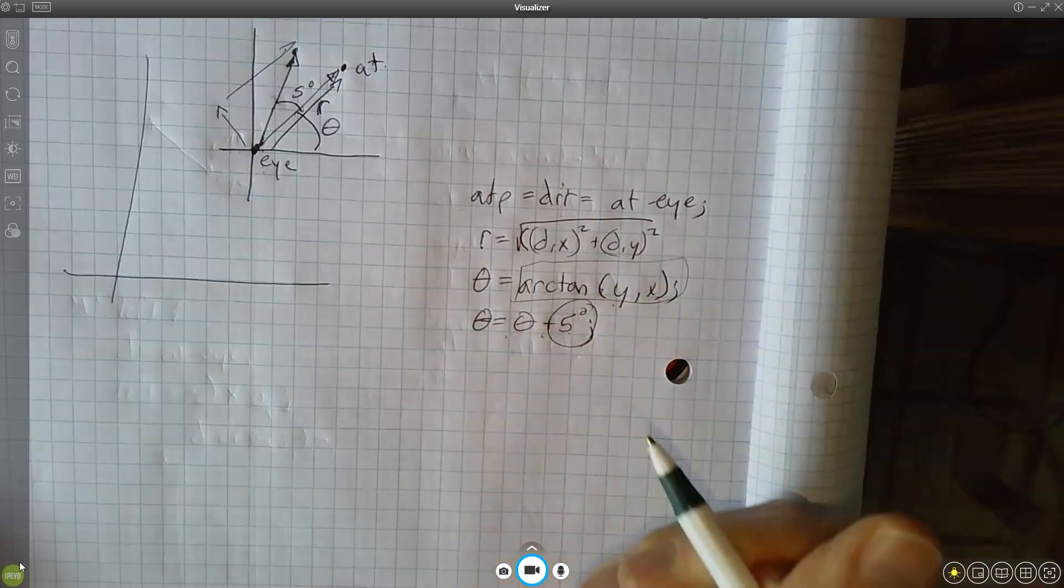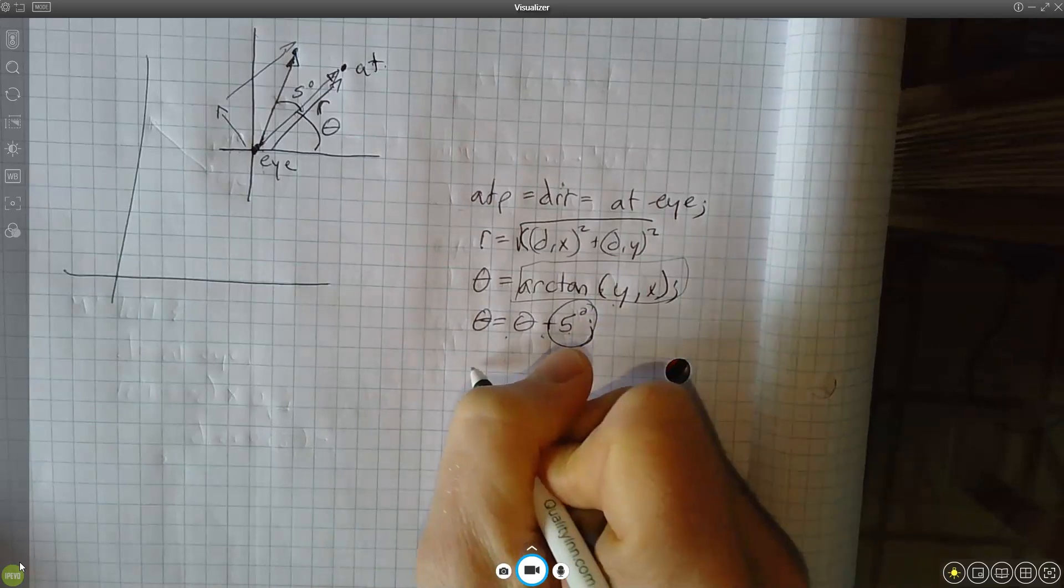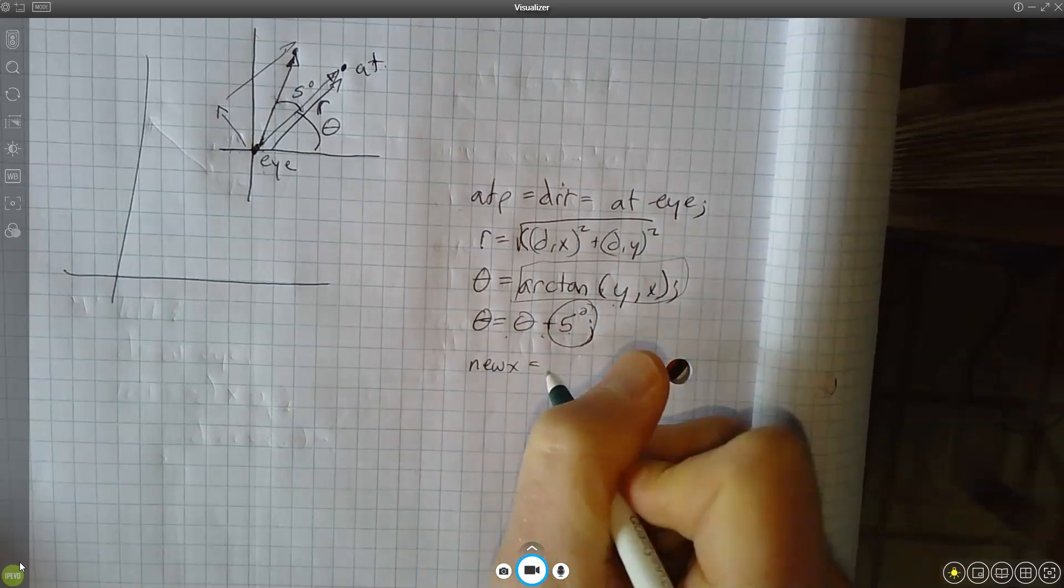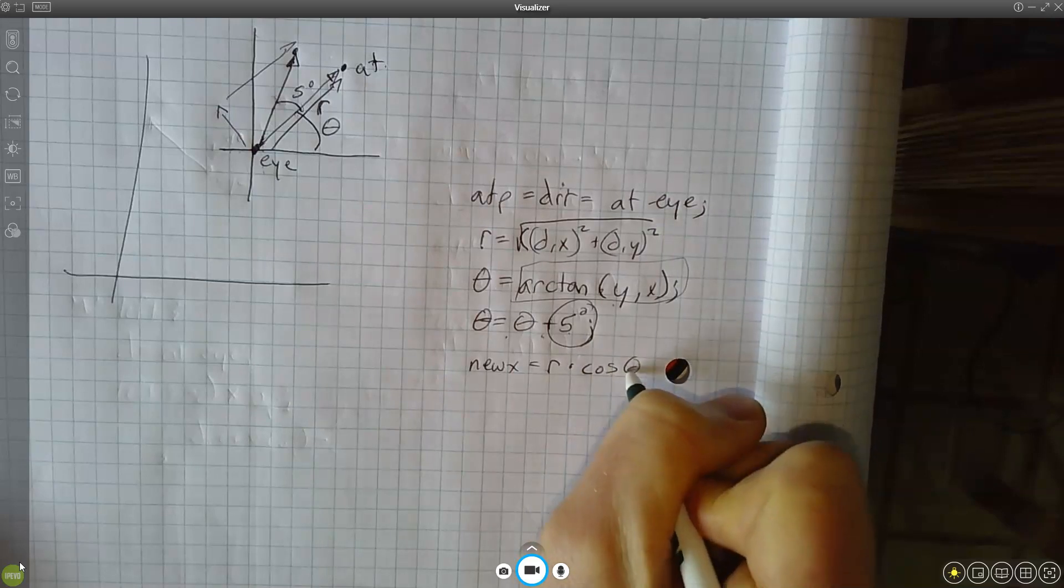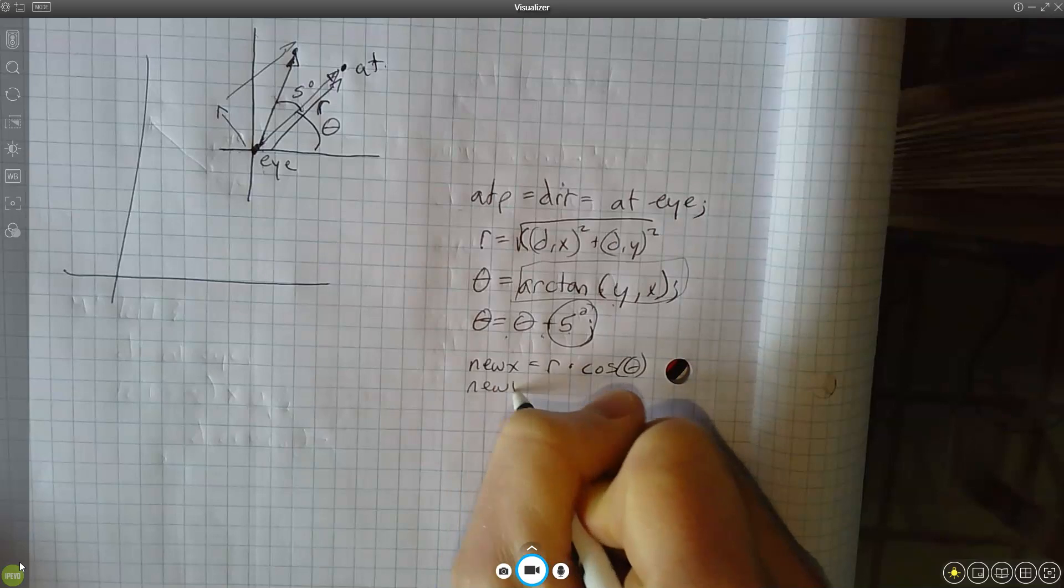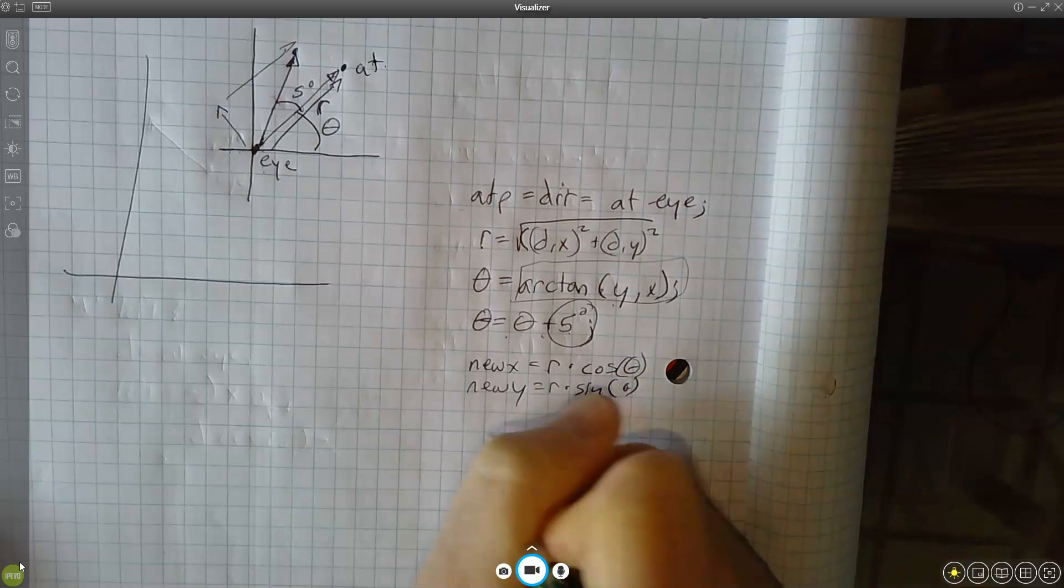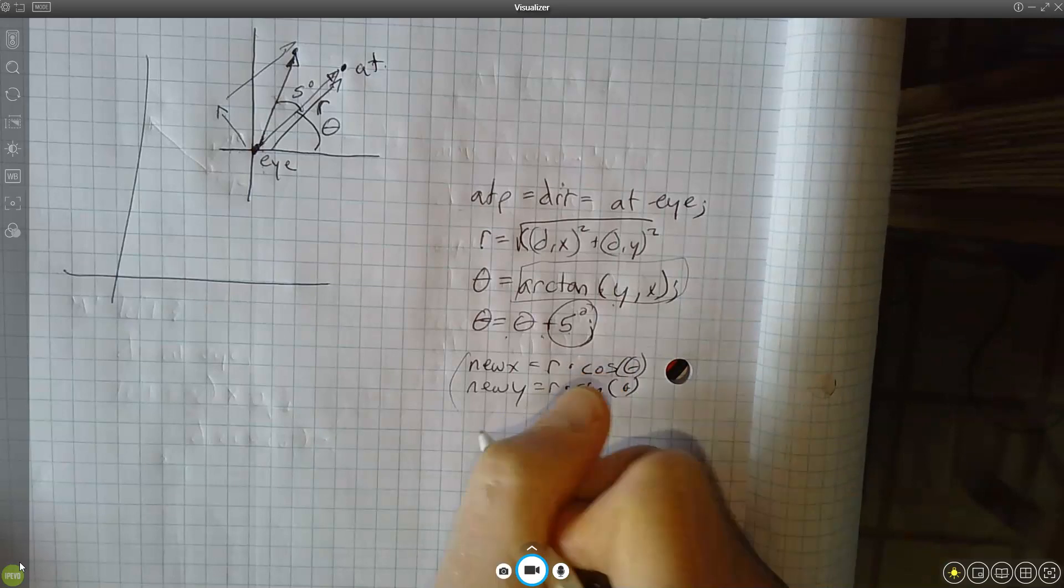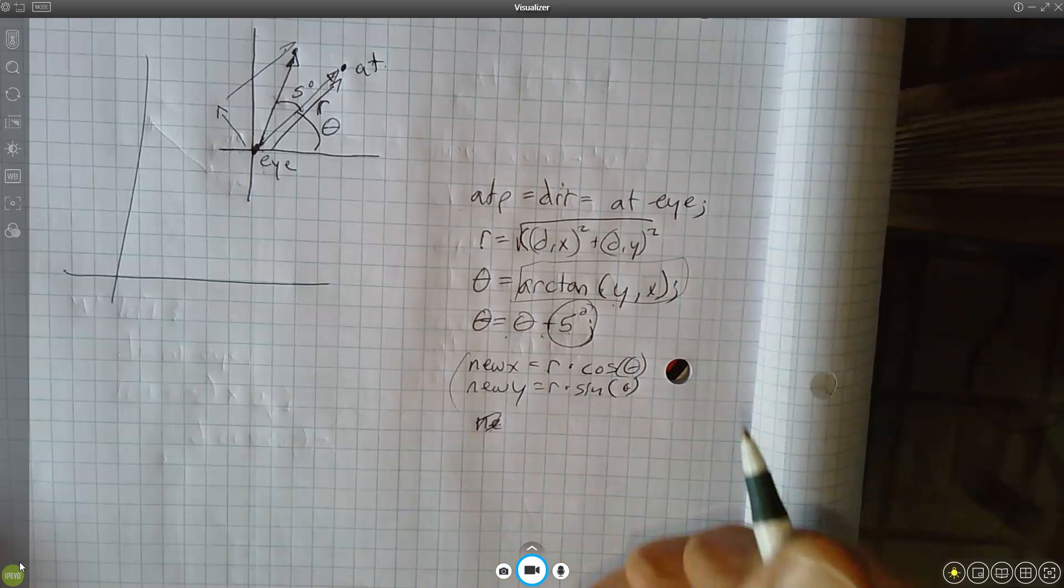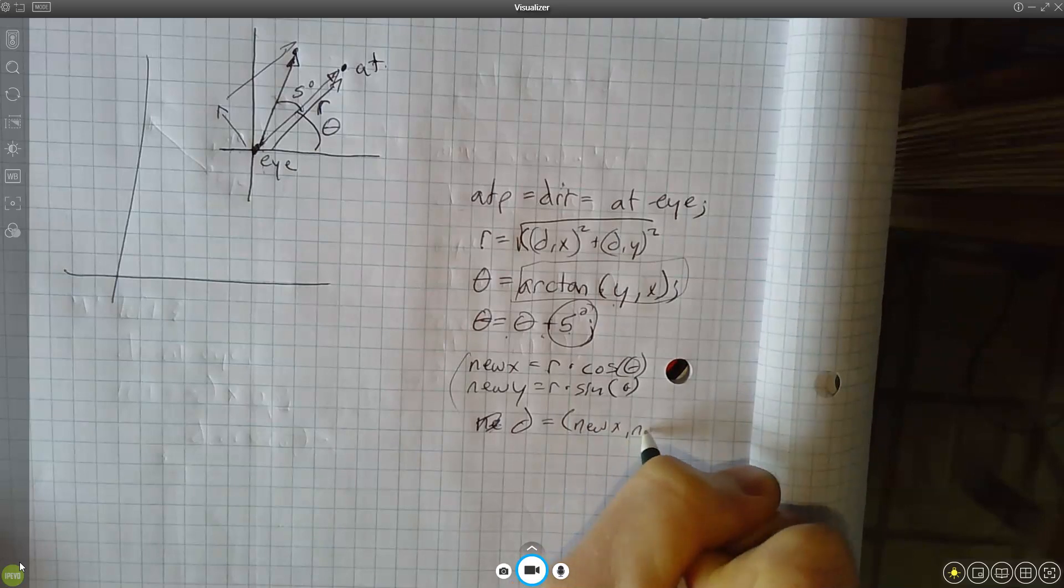So we now updated our theta and now we have to convert back. So how do we convert back? We have our new x is equal to r times cos theta, and new y equals r times sin theta. And then we have our new direction vector, so now we can reset our direction vector d is equal to new x, new y.